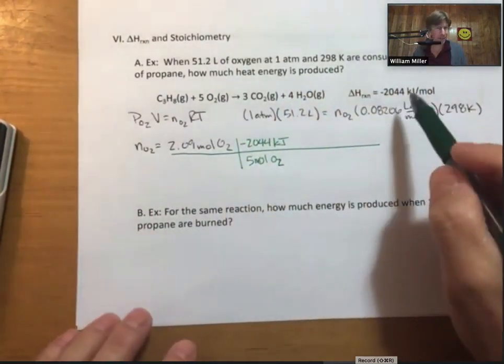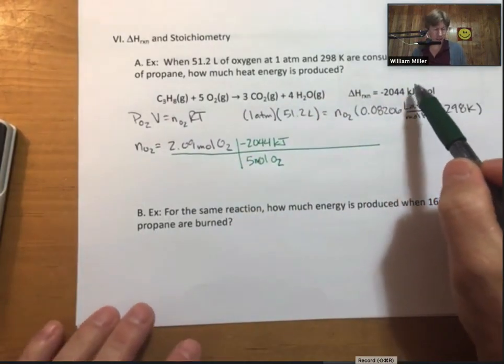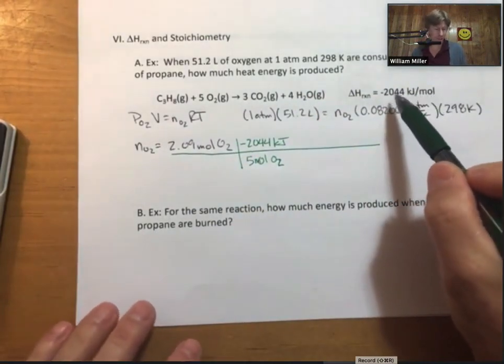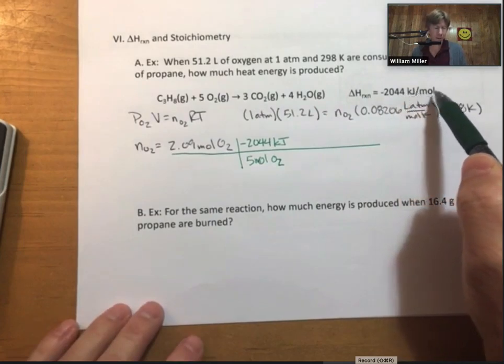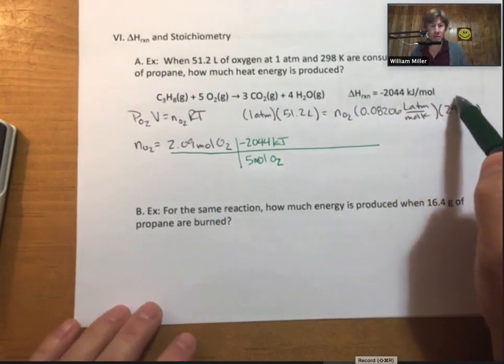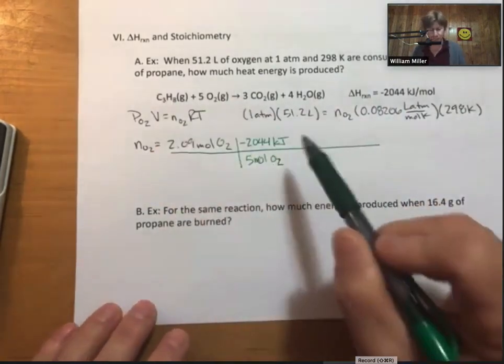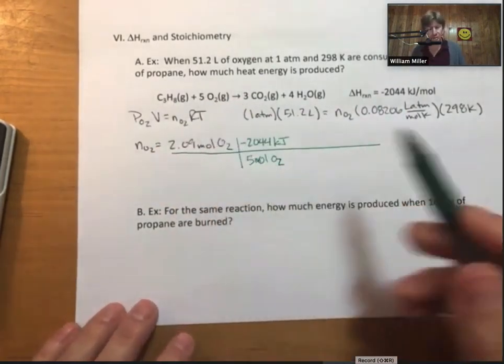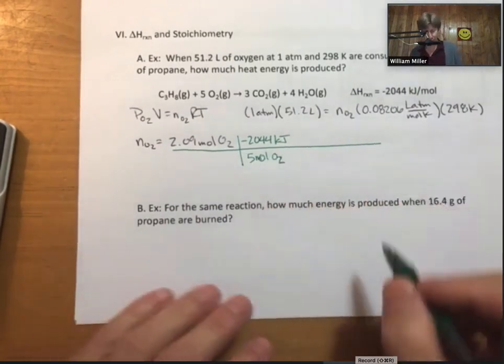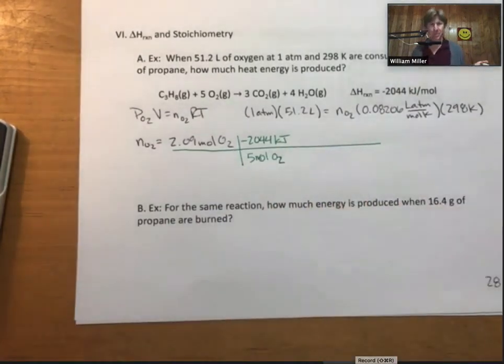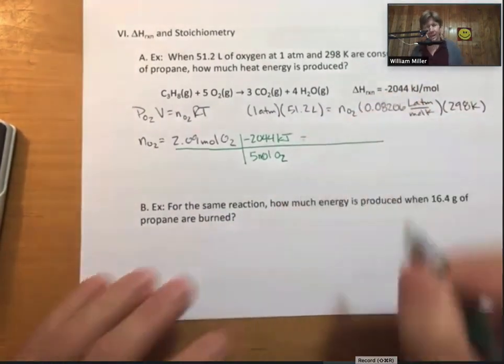Remember, from a previous lecture outline video, that's minus 2,044 kilojoules per mole of thing with a one coefficient like propane. It's 2,044 kilojoules released for 5 moles of oxygen. I think my picket fence is too long because I'm trying to find how much heat energy is produced. And I'm there.